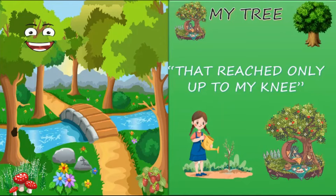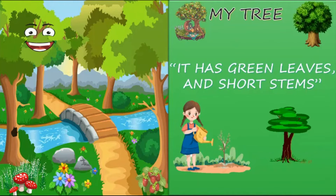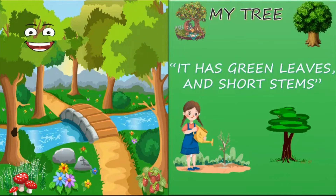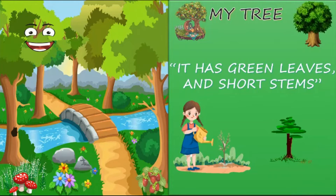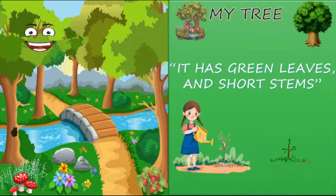Line 2: 'That reaches only up to my knee.' The tiny tree she planted reaches only till her knee. What is the spelling for 'knee'? K-N-E-E. Knee. Line 3: 'It has green leaves and short stems.' The tiny tree has green leaves and short stems. What is the spelling for 'green'? G-R-E-E-N. And 'short'? S-H-O-R-T. You can see the brown stem and the green leaf in the picture.